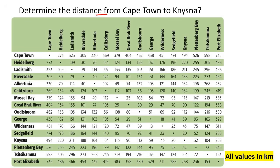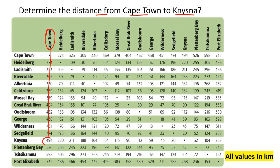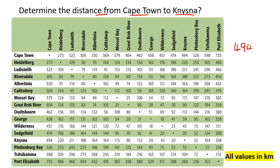Determine the distance from Cape Town to Neisner. Cape Town is here and Neisner is there. You could go down with Cape Town until you reach Neisner — that gives 494 kilometers. You could also approach it from the other direction with Neisner, and you'd still get 494 kilometers. We know it's in kilometers because they've told us. So the answer is 494.